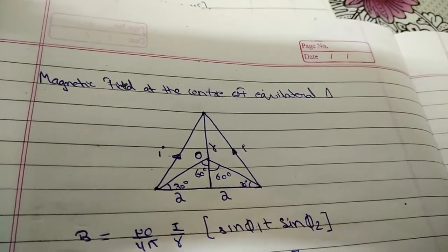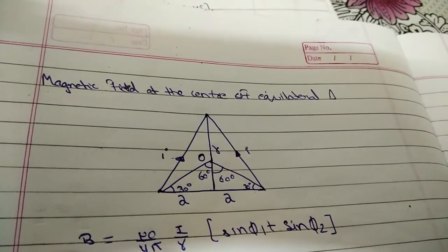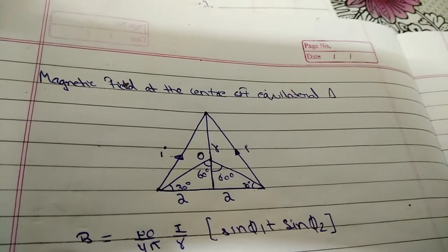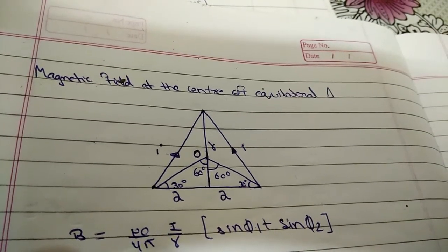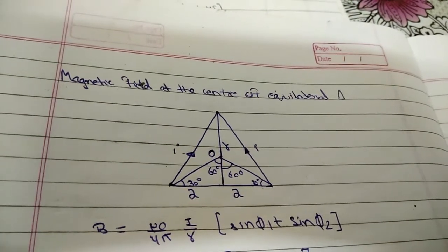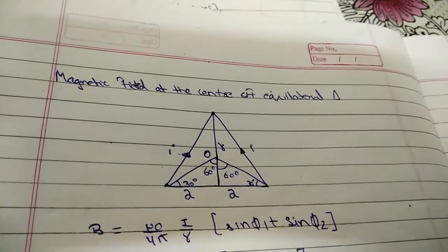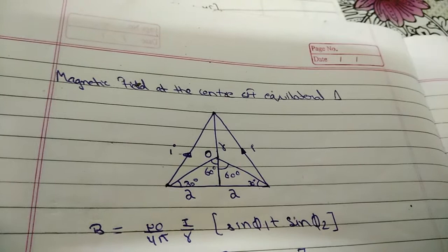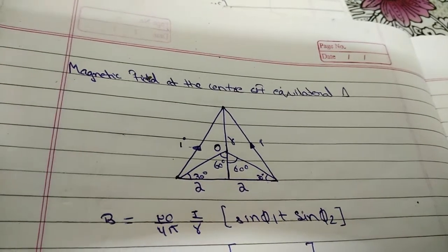Hello friends, today we are going to discuss magnetic field at the center of an equilateral triangle. We have made a diagram of an equilateral triangle in which current i is flowing and a perpendicular line is drawn at the center.